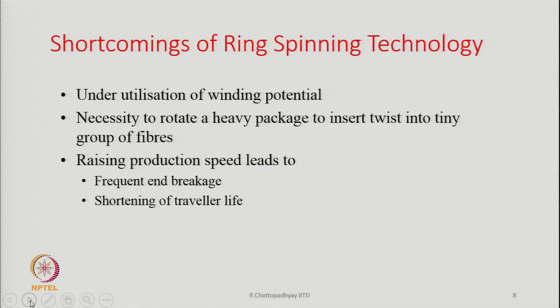If we move at a faster rate, there will be a lot of abrasion between the traveler and the ring. The traveler will be pressed against the ring with a higher centrifugal force. So friction will be quite high and as a result the abrasive damage will be very, very high and very quick. As a result, the traveler's life is shortened.